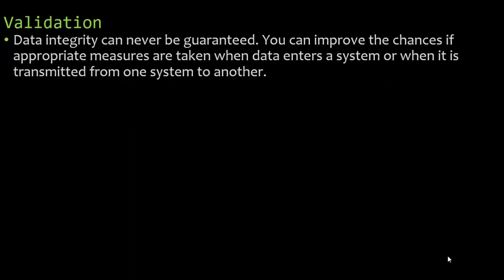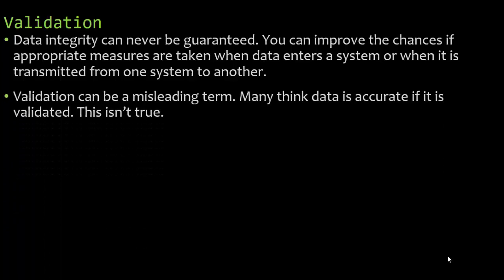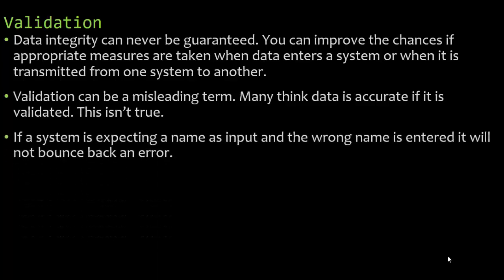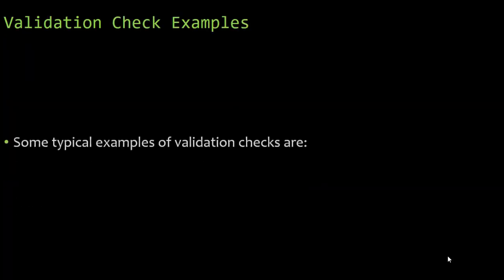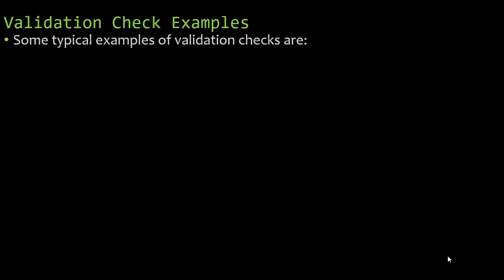Data integrity can never be guaranteed, but you can improve the chances if appropriate measures are taken when data enters a system or is transmitted. Validation can be a misleading term — many think data is accurate if it's validated, but that's not true. If the system expects a name and the wrong name is entered, it will not return an error. Validation can only prevent the wrong data type from being entered.